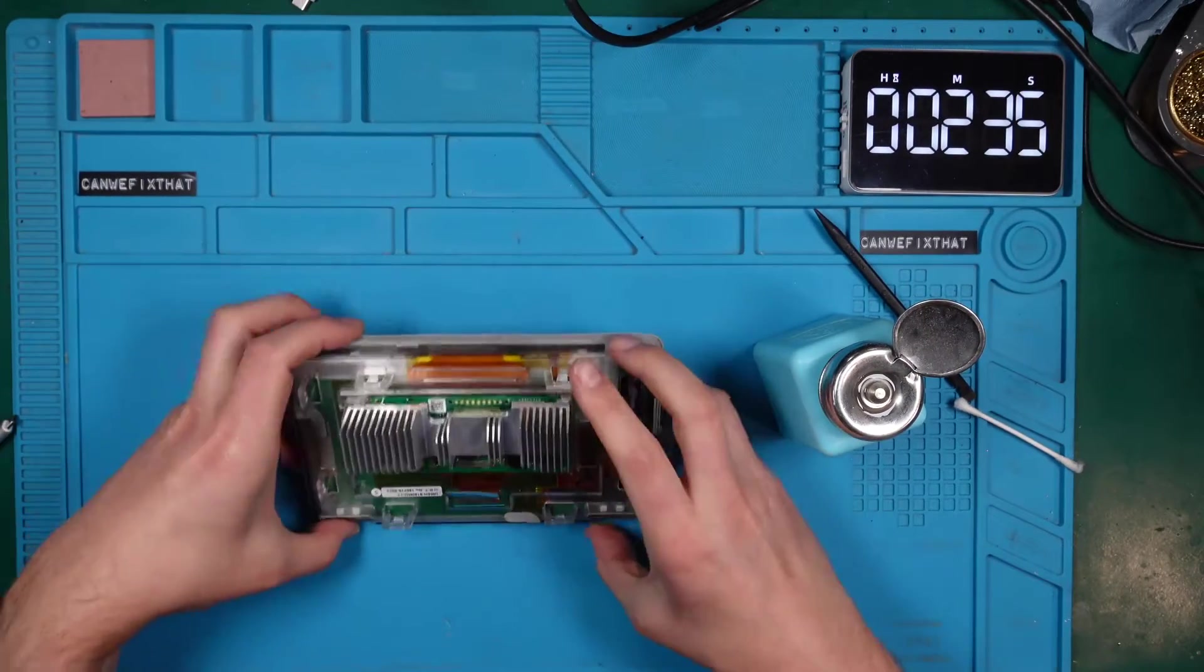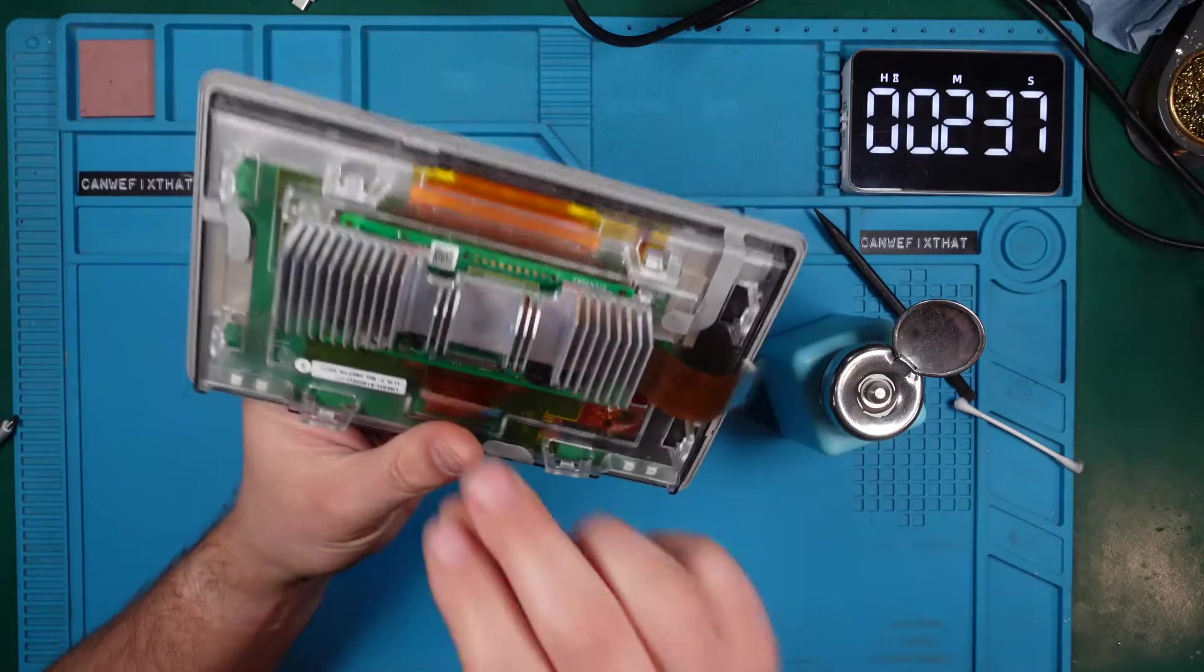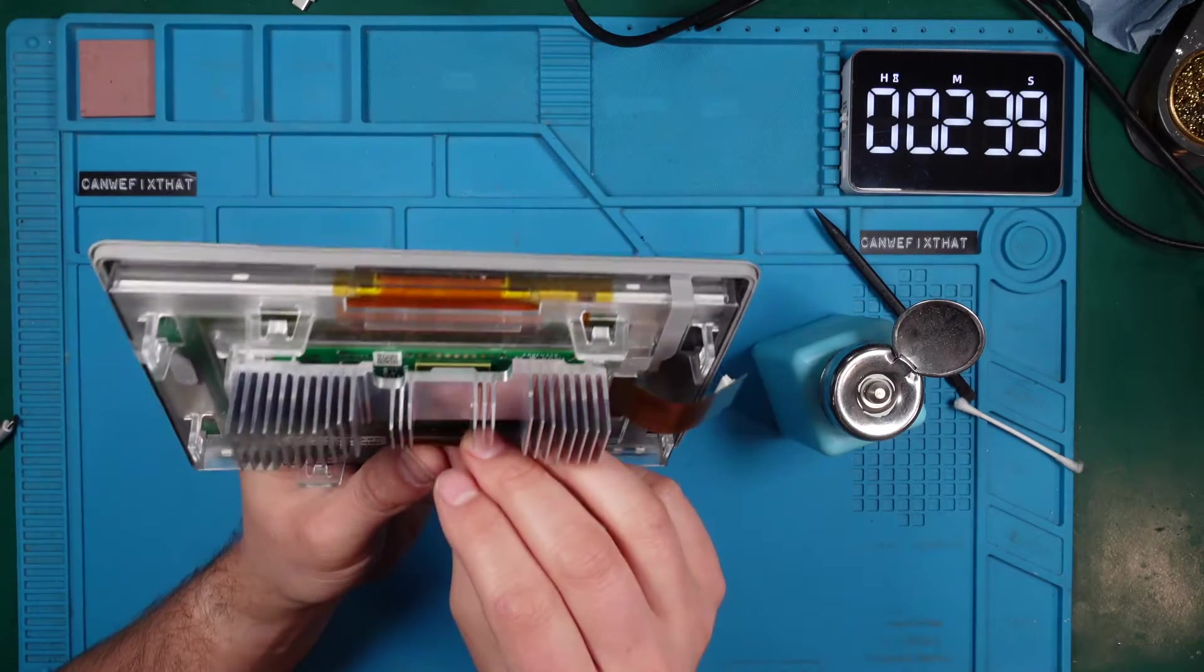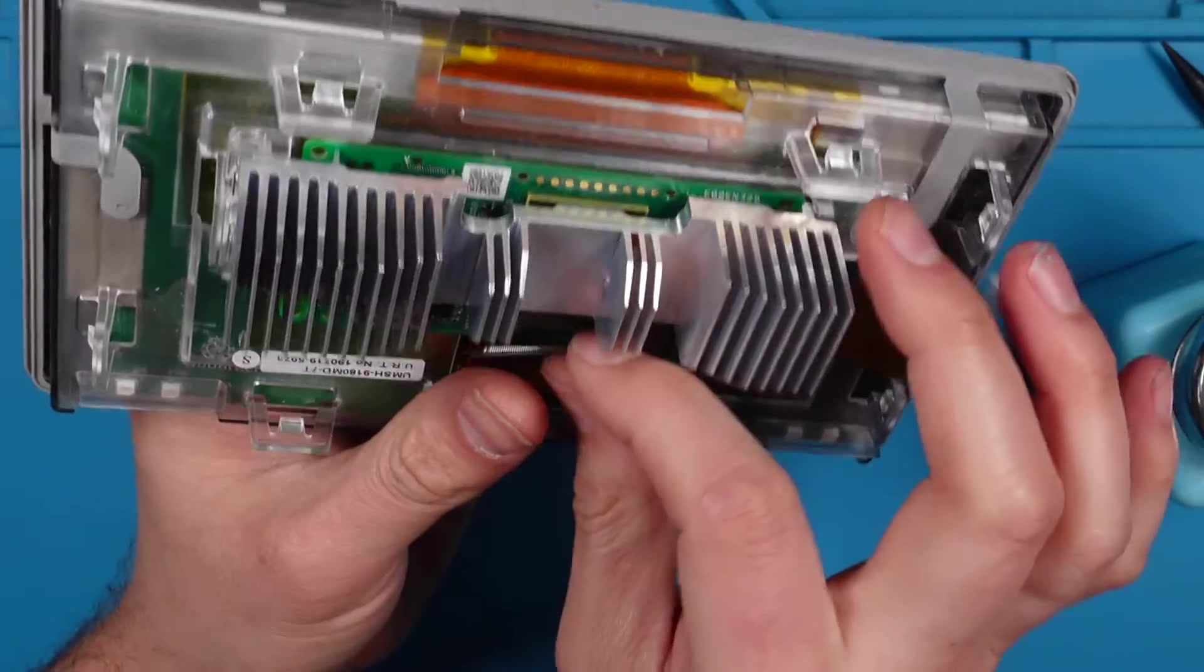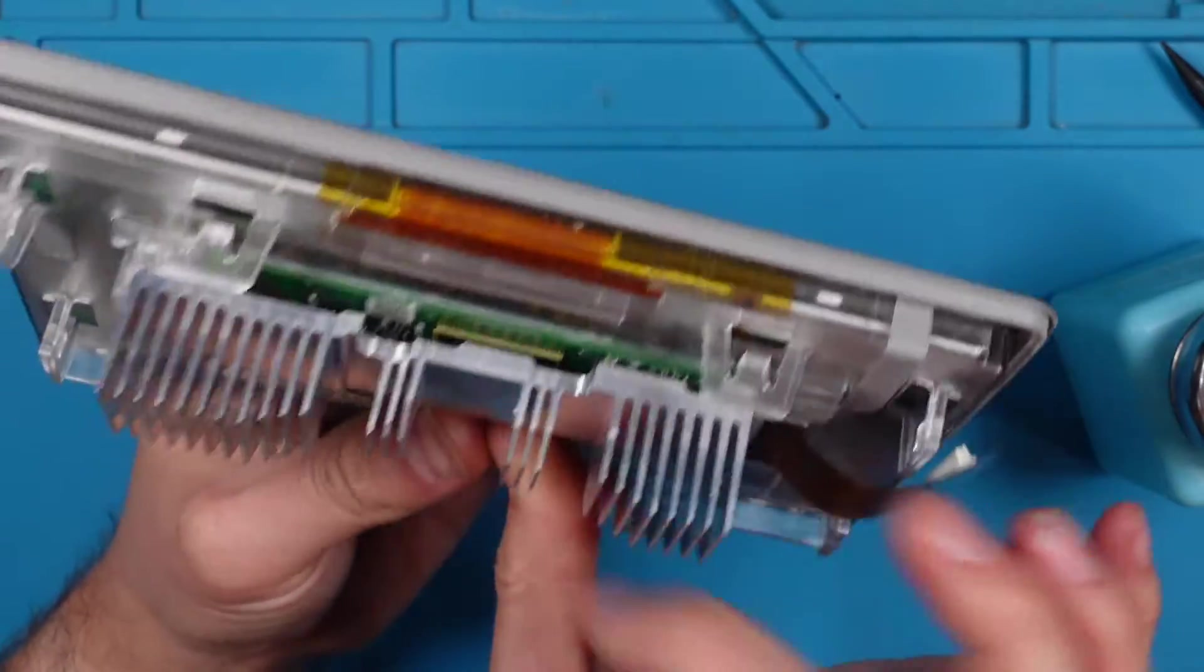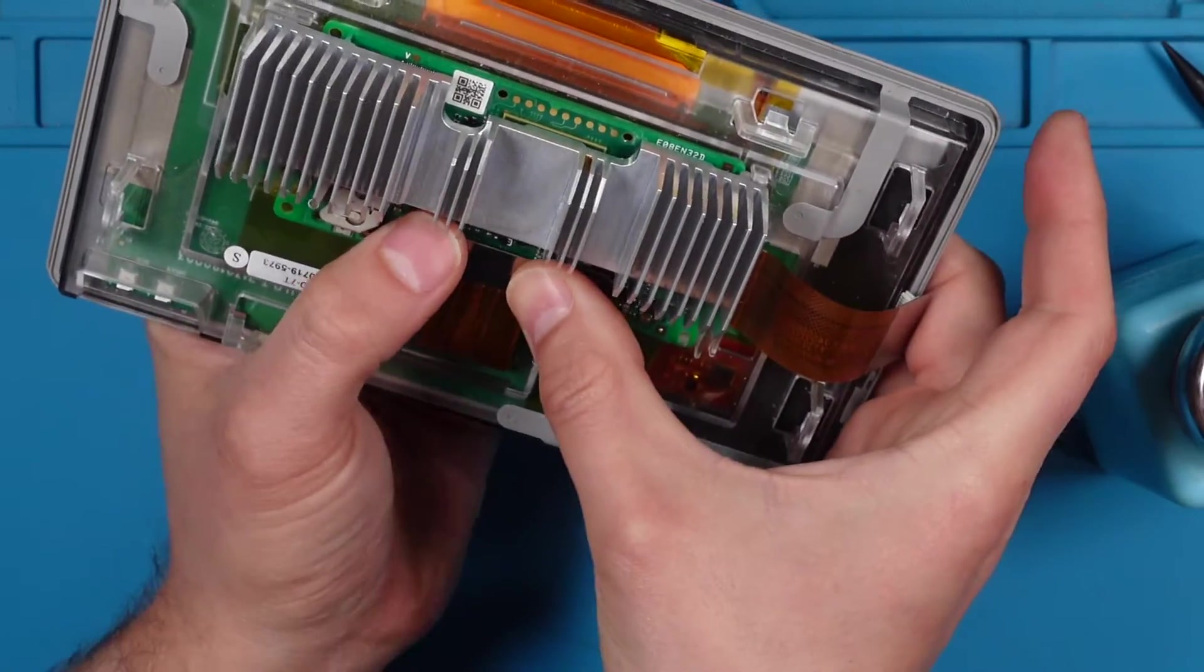Nice. This is a good point to connect this green ribbon cable to the mainboard. The biggest challenge is to align the cable with the connector correctly. Once aligned, a firm press should connect it without causing any damage.